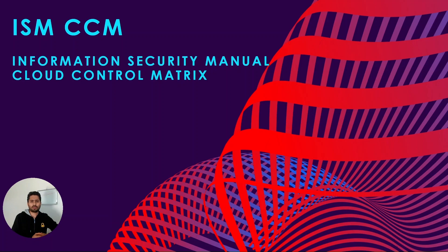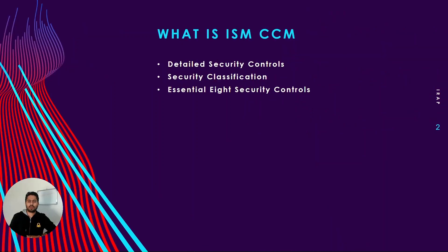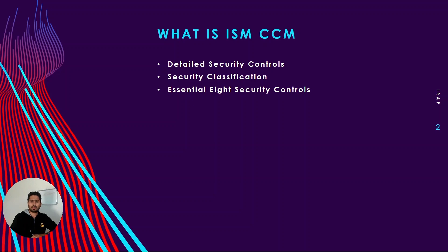Security Manual Cloud Control Matrix. ISM CCM is essentially an Excel sheet with security controls advised by the Australian Signals Directorate. These security controls have been divided into various categories and mapped to security classifications such as Official, Official Sensitive, Protected, Secret, and Top Secret. ISM CCM also has mapping to the Essential Eight maturity levels, which is another information security compliance standard advised by the Australian government.